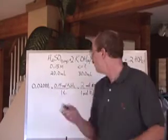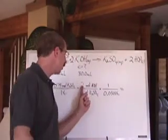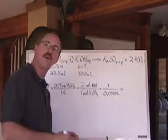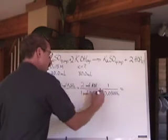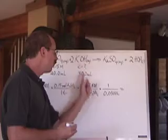Don't want moles of H2SO4. Want moles of KOH. So there's the ratio to take into consideration. Two moles of KOH to one mole of H2SO4. Put that H2SO4 on the bottom and it cancels out there. Now we've got moles of KOH.